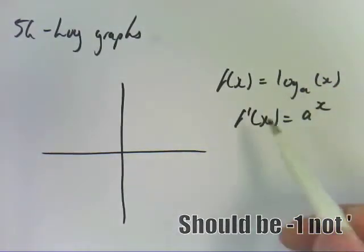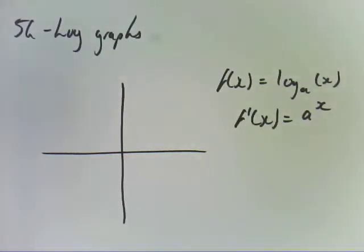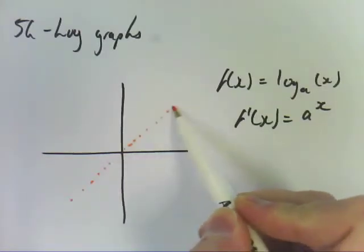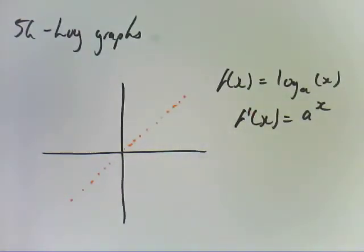Remember this f dash from a couple of exercises ago. That's where you sort of rotate it over the y equals x line. So that's what we're doing here.